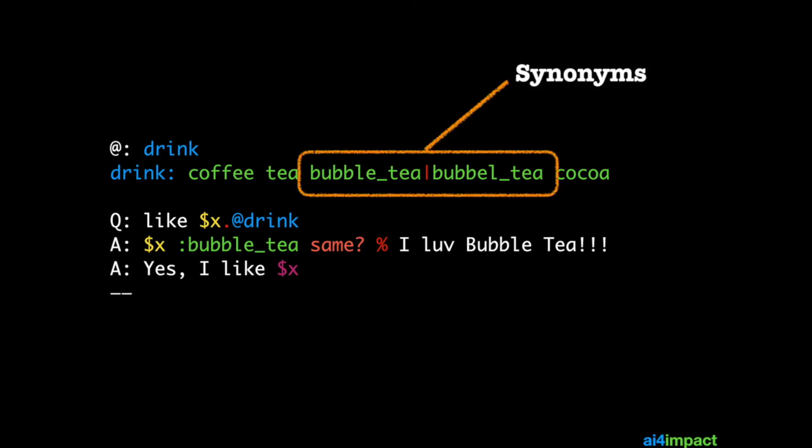So these are called synonyms and you can attach as many synonyms as you want for anything. The name of the thing will be the first synonym that's been defined so in this case the first one is the correct spelling for bubble tea. So that's being used in your rules.